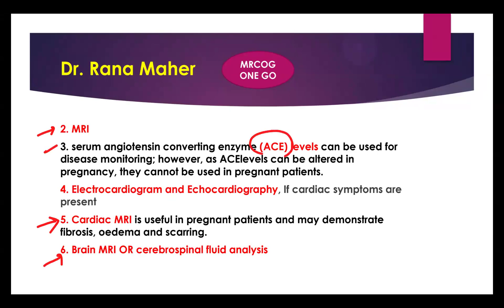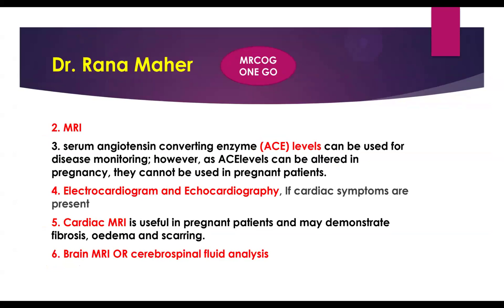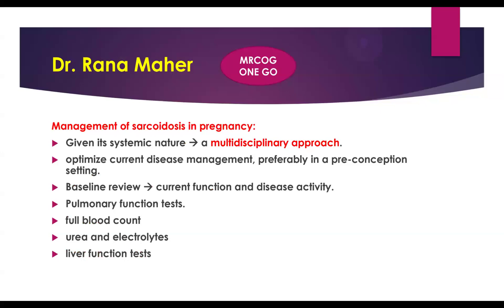Serum angiotensin-converting enzyme (ACE) levels will be altered in sarcoidosis. However, during pregnancy this level changes, so it cannot be relied upon. Echocardiography is offered to confirm cardiac involvement, and cardiac MRI to assess oedema, fibrosis, and scarring. If not conclusive, cerebrospinal fluid analysis can be offered.